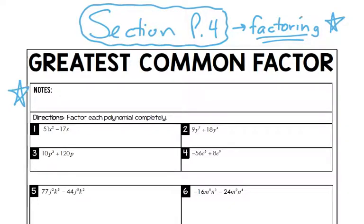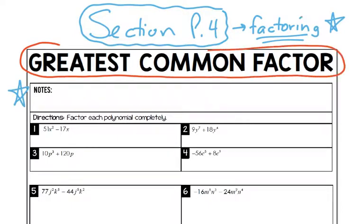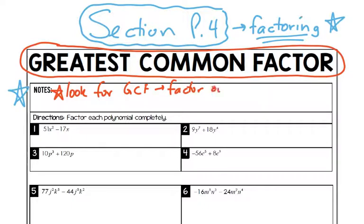The first flap when you open it up is all about the GCF — what we call the greatest common factor. It's always important that when you start factoring, the first step is to always look for a greatest common factor. Look for a GCF that you can factor out of every piece. Always look for a GCF that you can factor out first, and then we'll do the many other techniques that come up later.